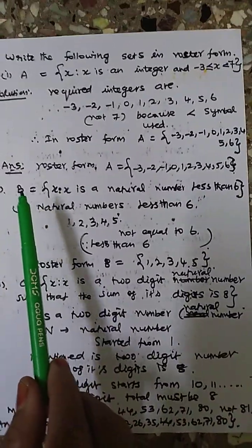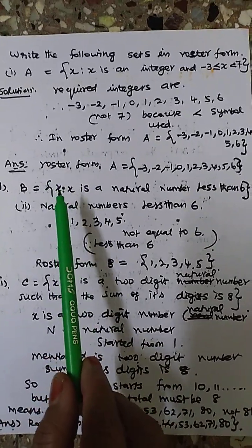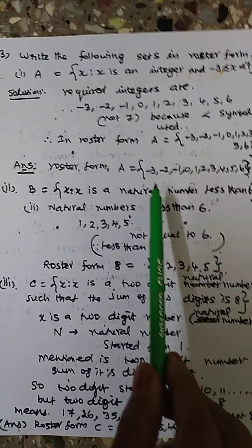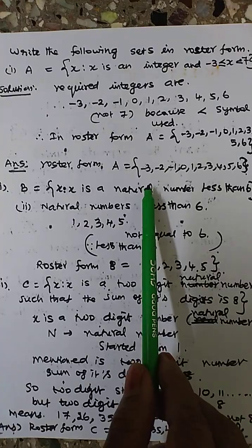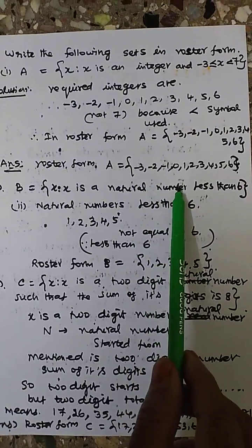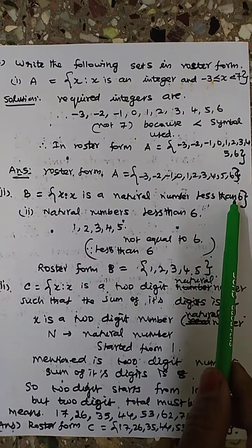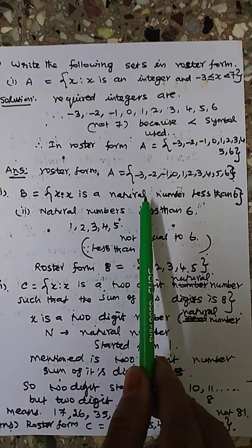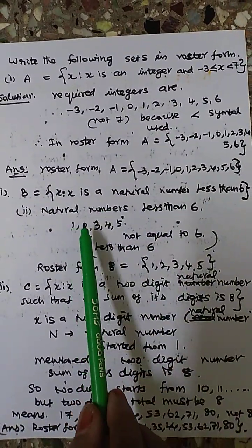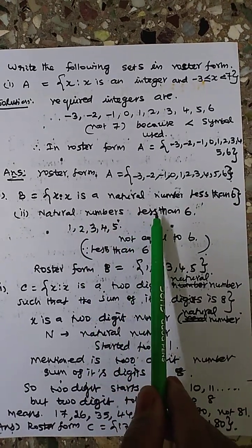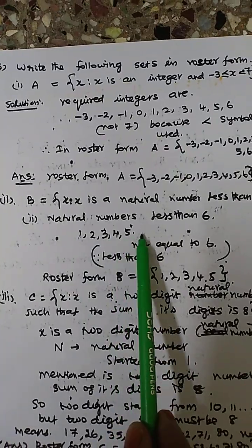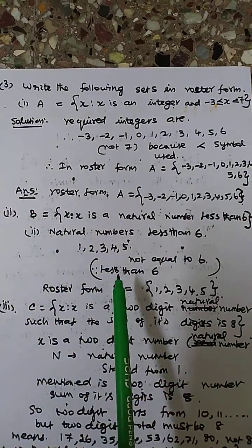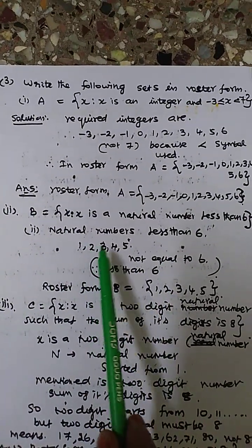The next sum: B = {X : X is a natural number, X < 6}. Natural number means starting from 1. Whole number means starting from 0. Less than 6 means not equal to 6 — up to 5. So natural numbers less than 6 are 1, 2, 3, 4, 5. Roster form: B = {1, 2, 3, 4, 5}.